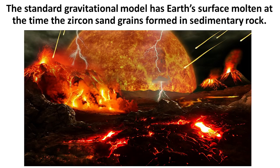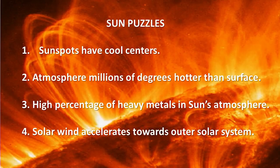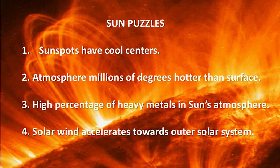What about the other planets? In the video Sun Puzzles, we showed four major problems with the standard model of the Sun: one, that the depths in which sunspots were cooler than the surface of the Sun; two, that the corona or atmosphere was millions of degrees hotter than the surface; three, that there was a high percentage of heavy elements in the Sun's atmosphere; and four, that the solar wind speeds up the further out from the Sun it goes — in other words, the wind accelerates towards the outer solar system. The gravitational model says the Sun collapsed by gravity into a giant nuclear furnace, but that model cannot answer these four problems satisfactorily without other assumptions.